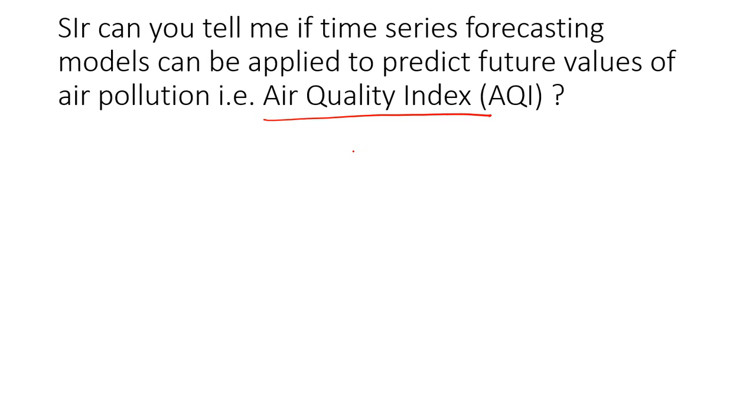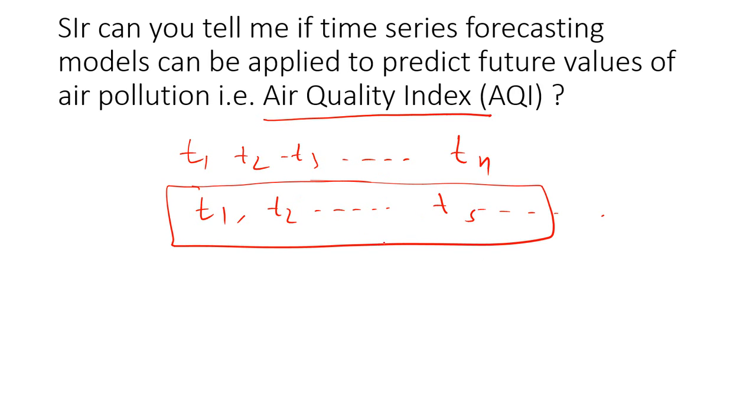So ensure that you have got continuous data without having missing data in the time series. So you must be having data for t1, data for t2, t3 and so on, right? You cannot have missing observations. So you cannot have data like t1 and t3 and then missing and then it starts with t5 and so on. You cannot have data like this and then expect to use time series forecasting techniques. That won't be suitable data for your time series forecasting model.